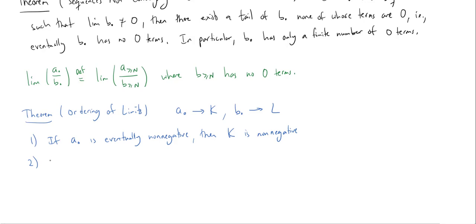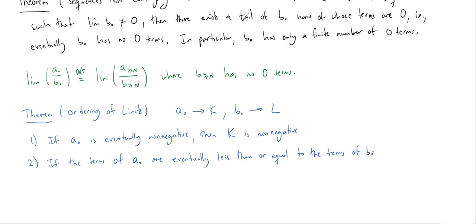Second, if the terms of sequence a are eventually less than or equal to the terms of sequence b — that is, a_n is less than or equal to b_n for all n greater than or equal to some large N — then we know that K is less than or equal to L. We keep using 'eventually' because for sequences we only care about what eventually happens.